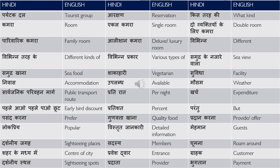सार्वजनिक परिवहन मार्ग — public transport route. सार्वजनिक means public, परिवहन means transport, and मार्ग is route. प्रती रात — per night. For example: इस कमरे का प्रती रात का यह किराया है — that is, the cost of this room per night is such-and-such.